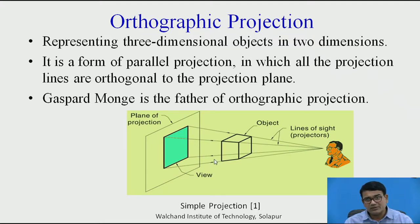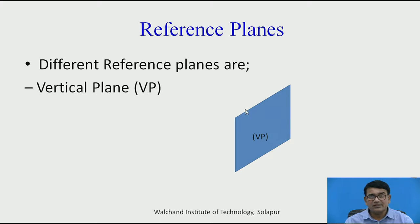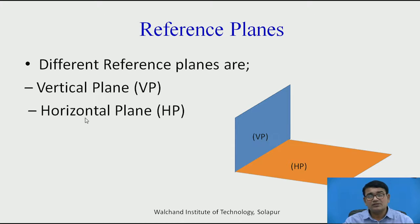You need one more plane. This first plane is parallel to your eyesight. The second plane, which is perpendicular to your eyesight, is called the horizontal plane. So this is the vertical plane, which is parallel to your eyesight, and another plane is the horizontal plane, which is perpendicular to your eyesight and parallel to the ground.